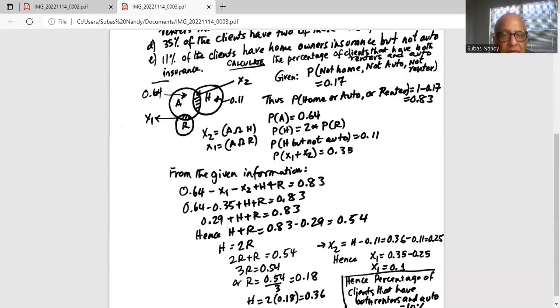From the given information, 0.64 minus X1 minus X2 plus homeowners insurance plus renters insurance equals 0.83. Now 0.64 minus X1 and X2 equals 0.29. So 0.29 plus homeowners plus renter equals 0.83. Hence, H plus R equals 0.83 minus 0.29 is 0.54.